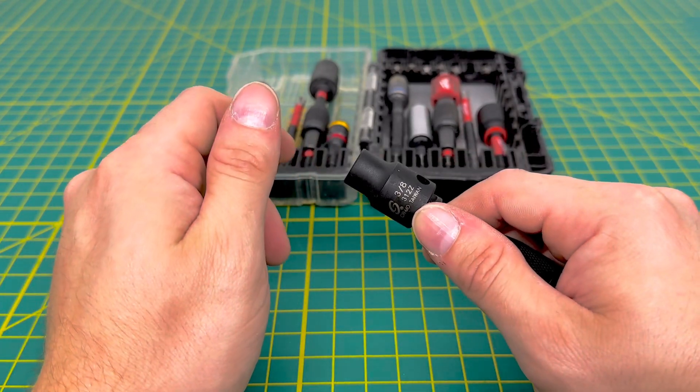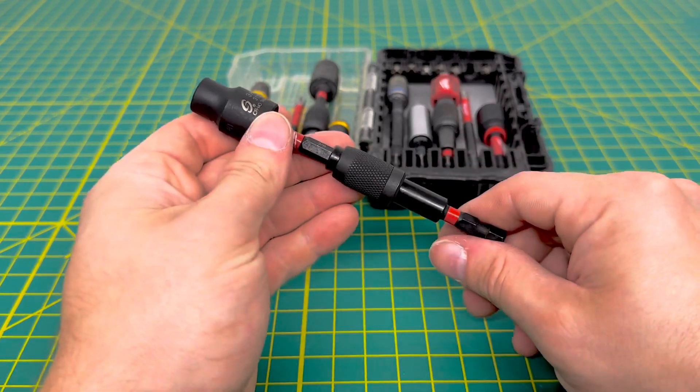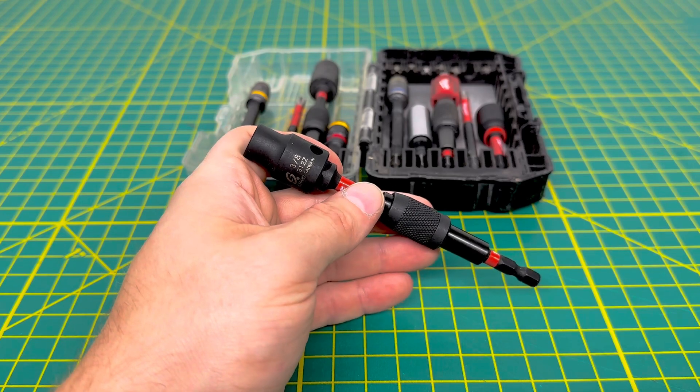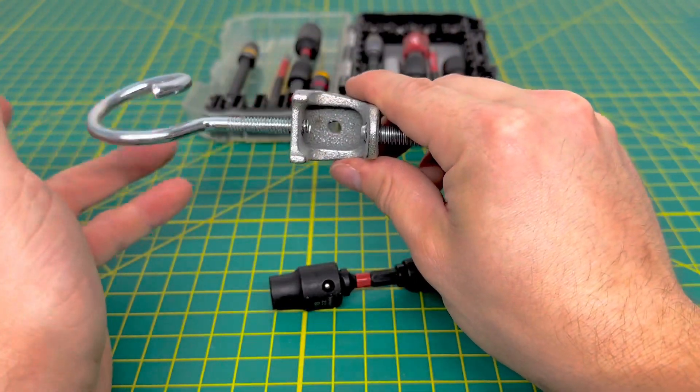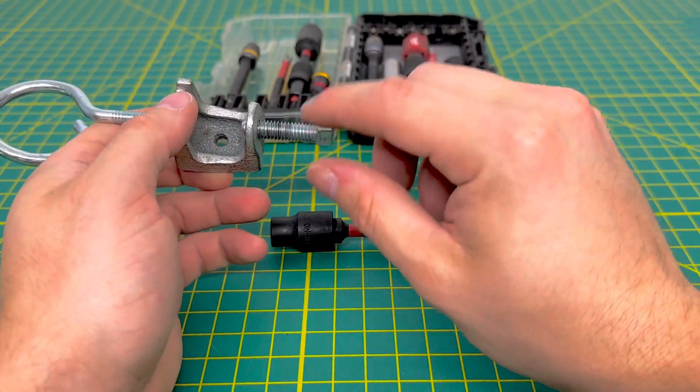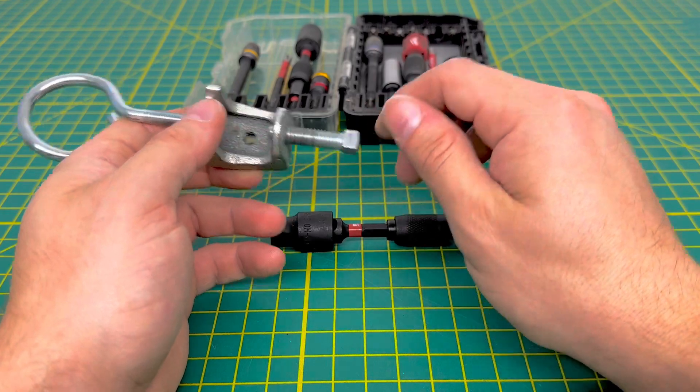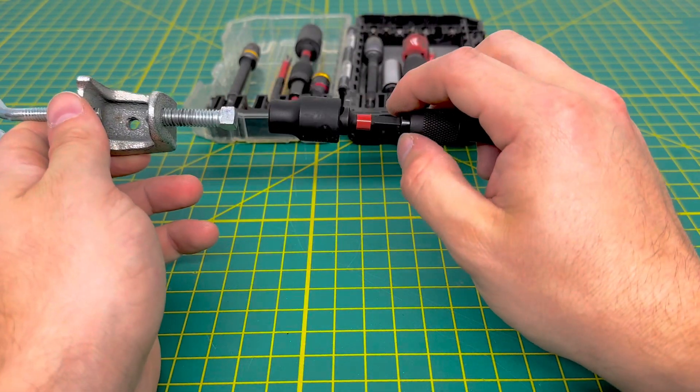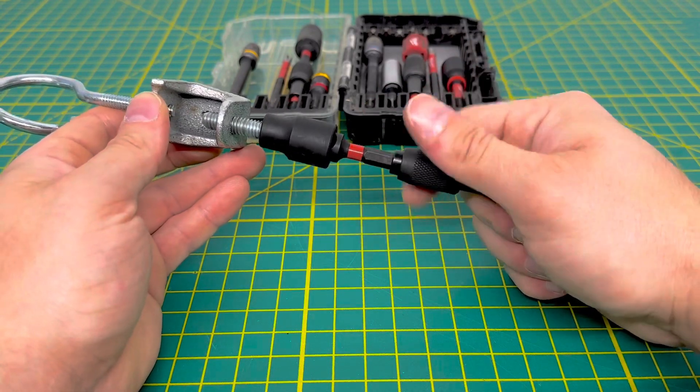I did pick up this Sonex 3/8ths 12-point socket because I was getting tired of using a box-end wrench when I was working with these bridle rings right here, these bridle rings and a clamp. So you typically use a 3/8ths box-end wrench to tighten this down, but I have found if you get a 12-point 3/8ths socket, it goes on there without any issue, and then you can attach this to your drill.